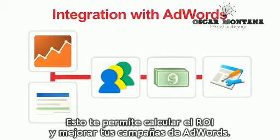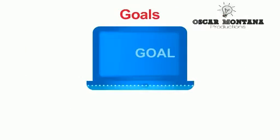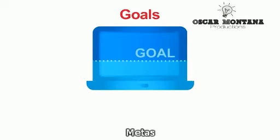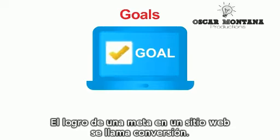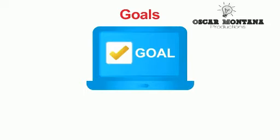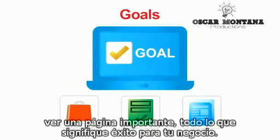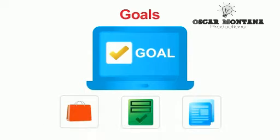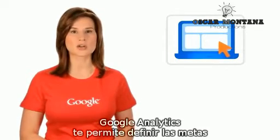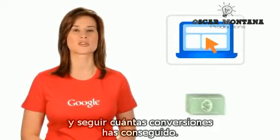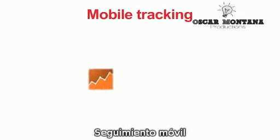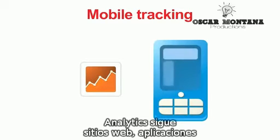Goals: achieving a website goal is called a conversion in online marketing. A conversion can be a sale, a submission of a form, a view of an important page — whatever means success for your business. Google Analytics lets you define goals and track how many visits turned into conversions.